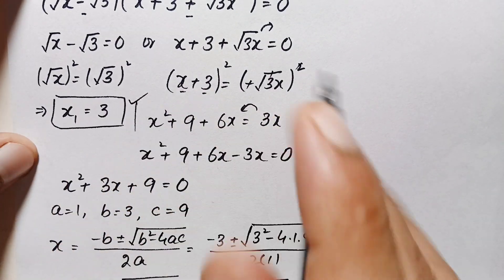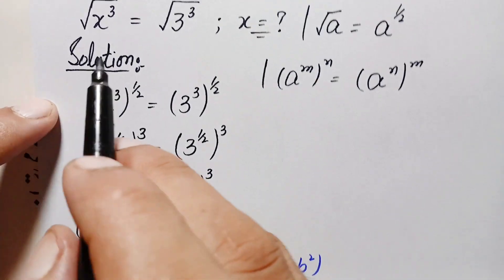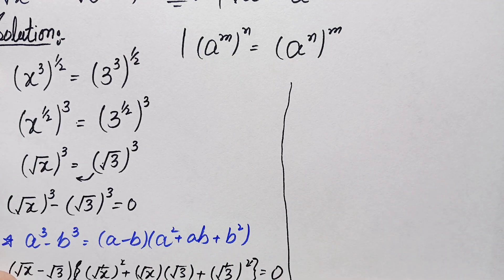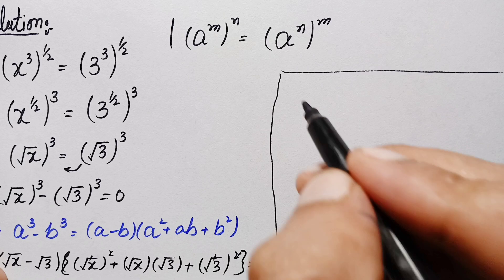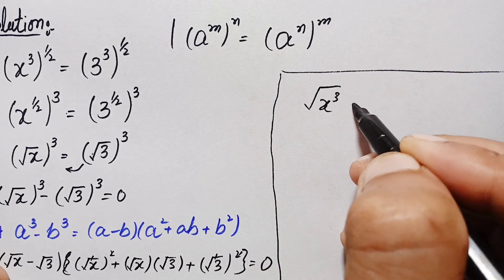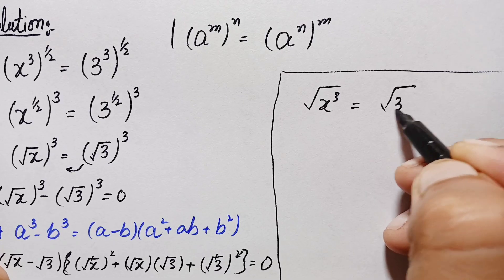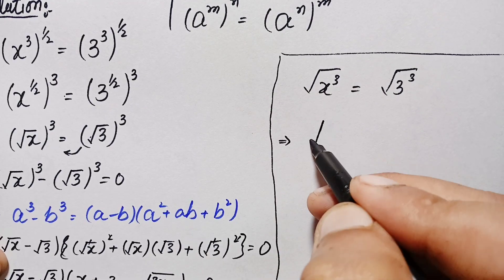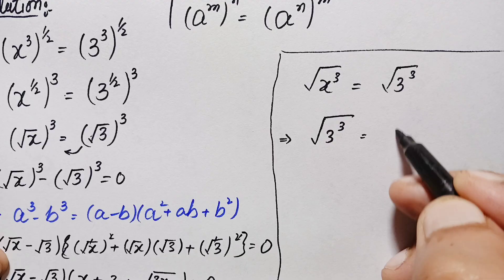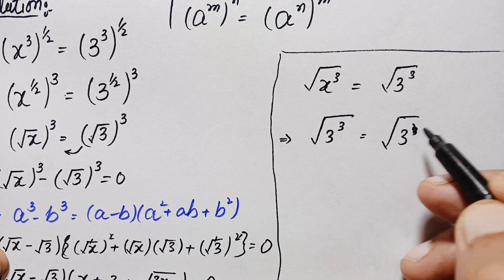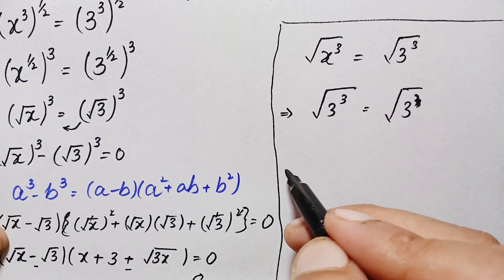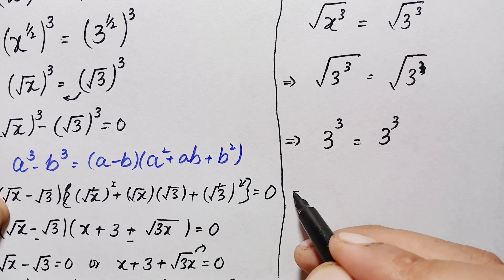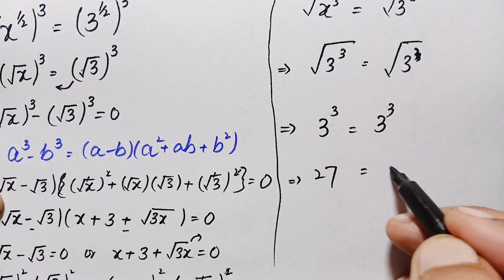We will verify that x = 3 is a correct real solution. Substituting x = 3 into the original problem, √(3³) = √(3³), we get √27 = √27. Taking the square on both sides: 27 = 27, which is true. Both sides are equal, confirming x = 3 is correct.